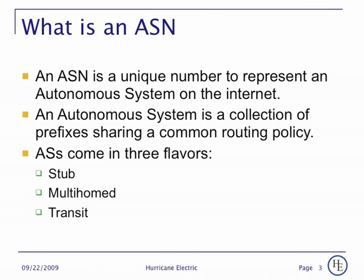Multi-homed is an unusual kind of AS that doesn't occur too often, where they may provide transit between a collection of autonomous systems that are somewhat related, but they don't provide full internet transit to external organizations, and they probably have upstream autonomous systems that they receive full routes from. And finally, transit, which is what most internet service providers are — they have a full default free table which they advertise or provide a default towards to their downstream customers.